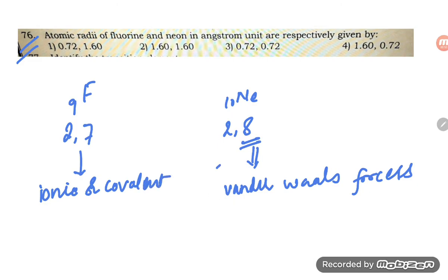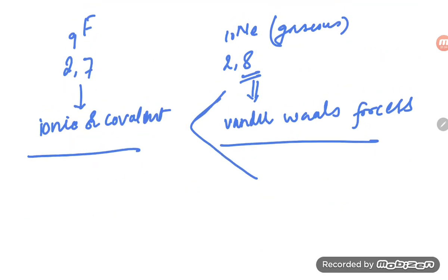So what will happen? If Van der Waals forces are larger, it means the radii of neon will always be higher than the radii of fluorine. Now let's check the options.